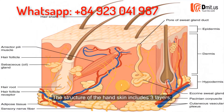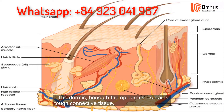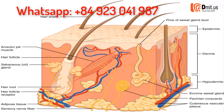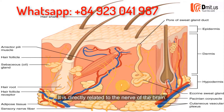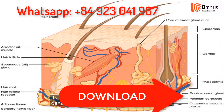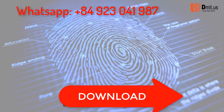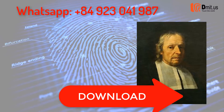The structure of the hand skin includes three layers: the epidermis, the outermost layer of skin; the dermis, beneath the epidermis, which contains tough connective tissue. The dermis is directly related to the nerves of the brain, and its fingerprints are considered as a mapping to the density of nerve cells in the brain. This forms the scientific basis of fingerprint biometrics.